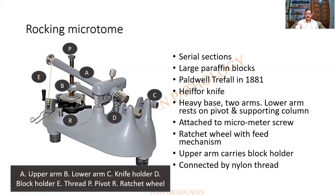Large paraffin blocks can be cut. It was designed by Caldwell and Trefall in 1881, and the knife originally used was the heifer knife. Its advantages include a heavy base, two arms, and the lower arm rests on a pivot attached to a micrometer screw. It has a ratchet and wheel mechanism; the upper arm carries the block holder, and all these are connected by a nylon pipe.